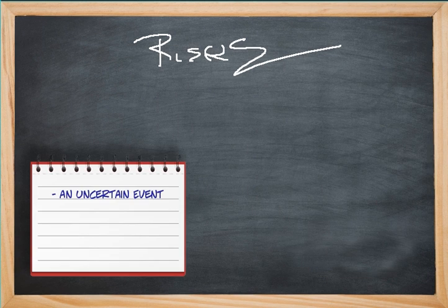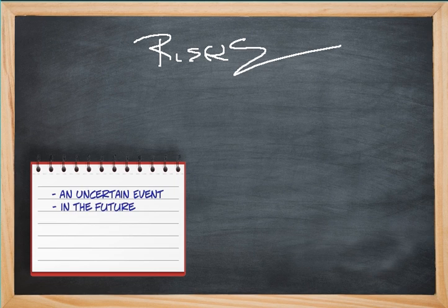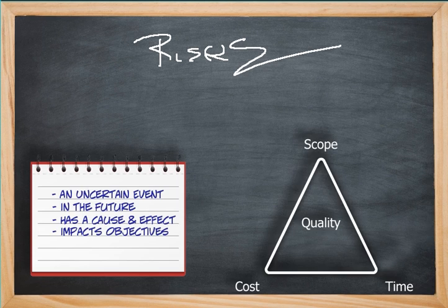What is a risk? First, it's an uncertain event or condition. It's always in the future, has one or more causes, and could affect at least one project objective. It's usually in the form of our triple constraint, which is impacting scope, in other words the features, schedule which is time, cost same as budget, and quality, which implies a certain degree of customer satisfaction.